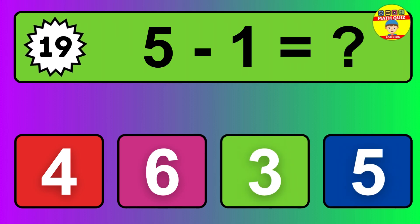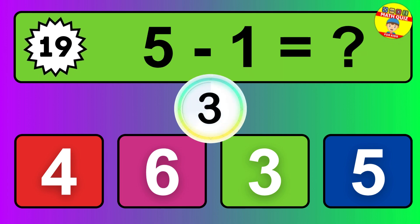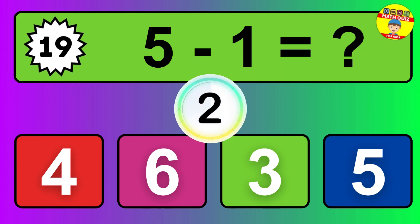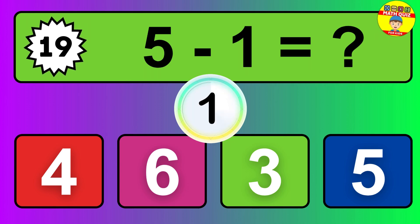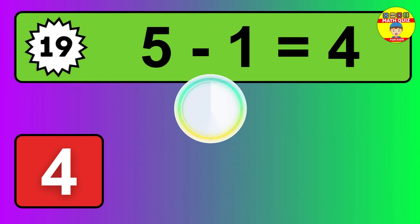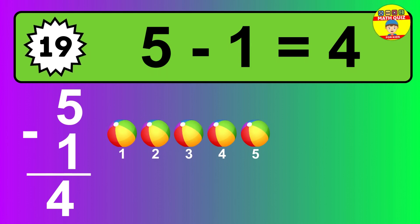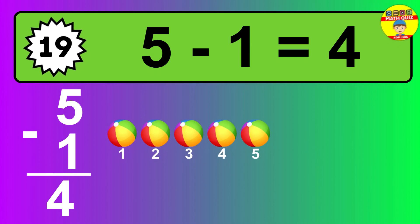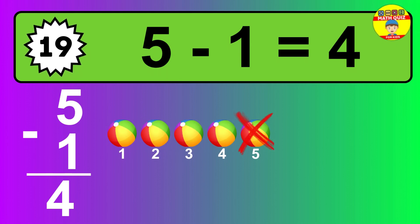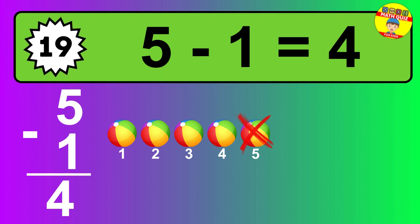Question 19. 5 minus 1 equals what? The answer is 5 minus 1 is 4. Let's count it: 1, 2, 3, 4.